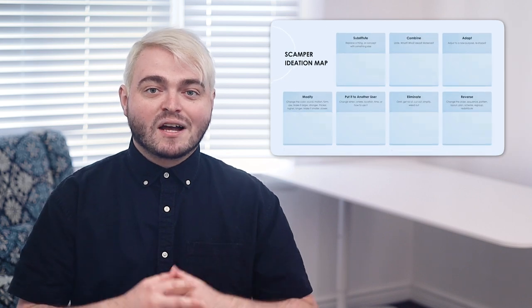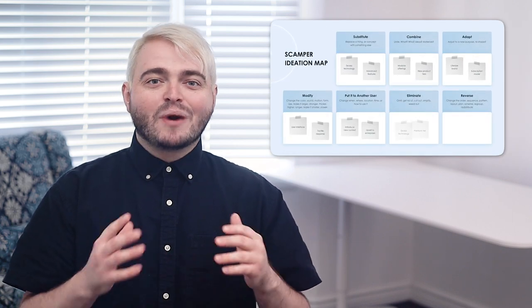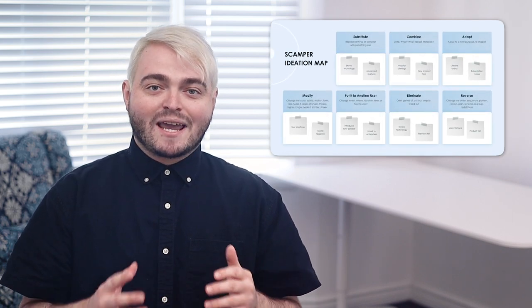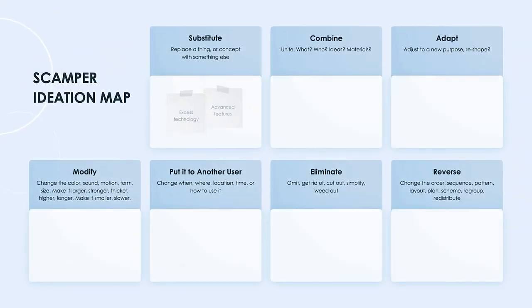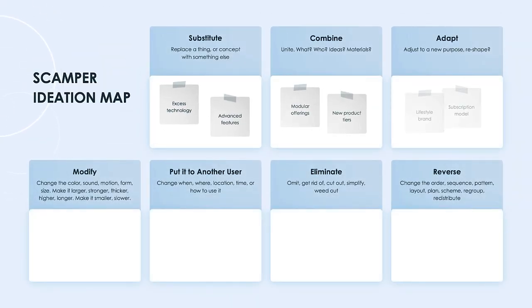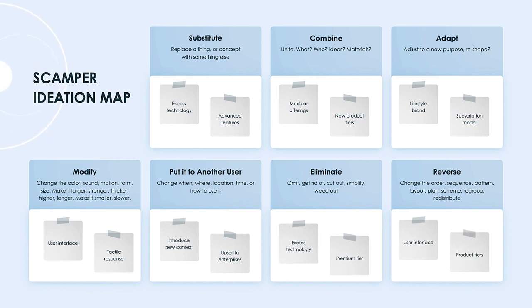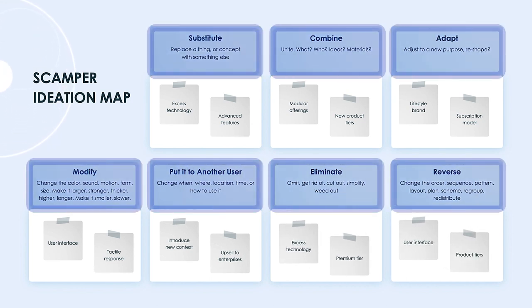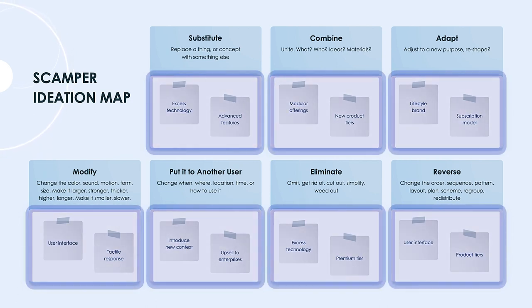First up is the SCAMPER ideation map. To develop a disruptive concept, it first must be envisioned. The brainstorming tool SCAMPER helps with this. This sticky note style visualization simulates how a physical brainstorm in the office might feel. Answer the questions under each bucket to form your ideas, and drag the sticky notes to rearrange them across categories as you ideate.